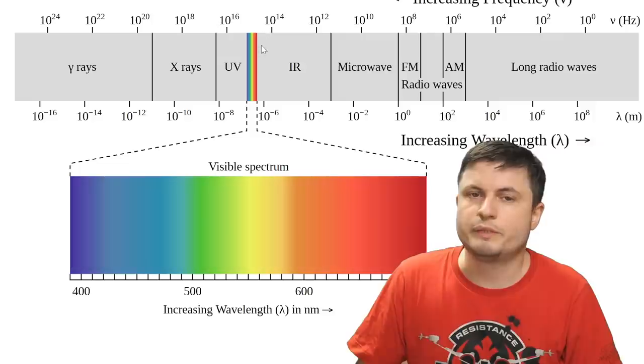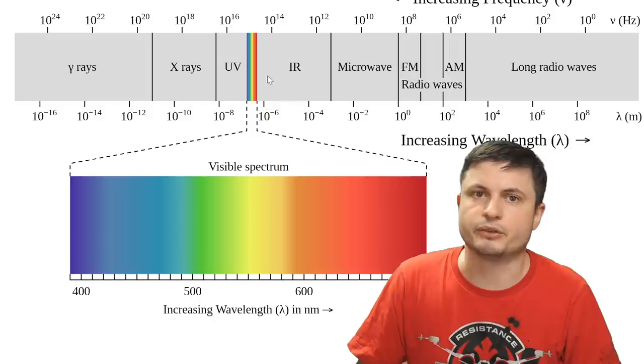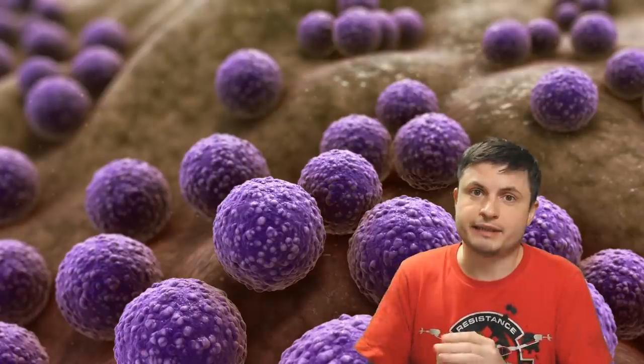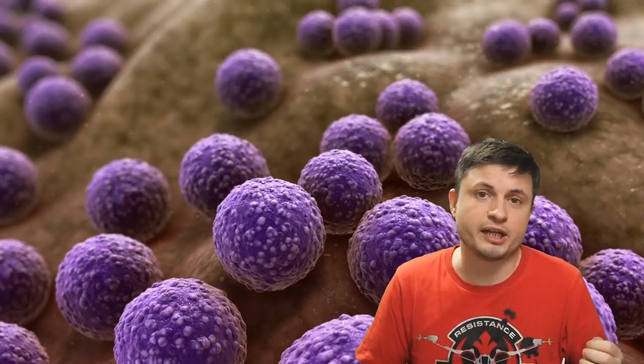But in case of red dwarf planets, we would expect this red edge to be maybe slightly farther toward the infrared, maybe around 750, maybe even 800 nanometers. So basically slightly shifted to the right on this picture right here.